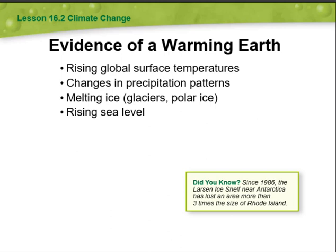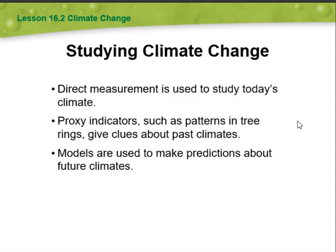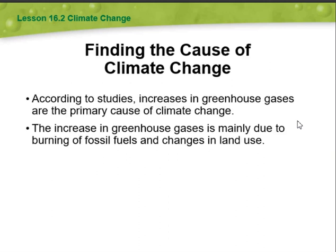Studying climate change: direct measurement is used to study today's climate; proxy indicators such as patterns in tree rings give clues about past climates; and models are used to make predictions about future climates. We will also be finding the cause of climate change.